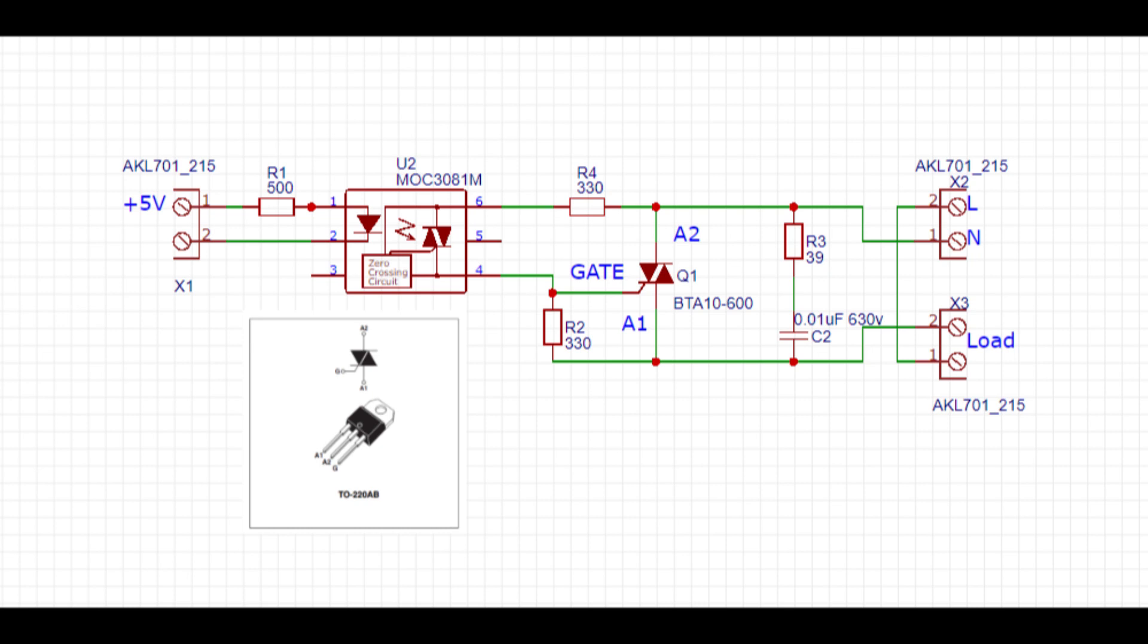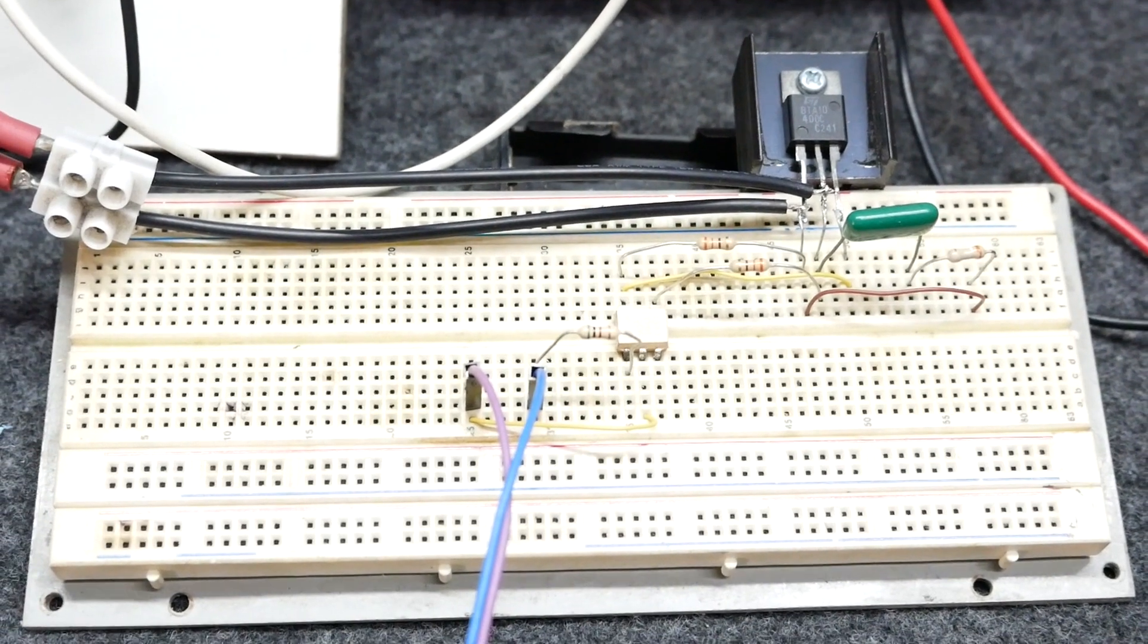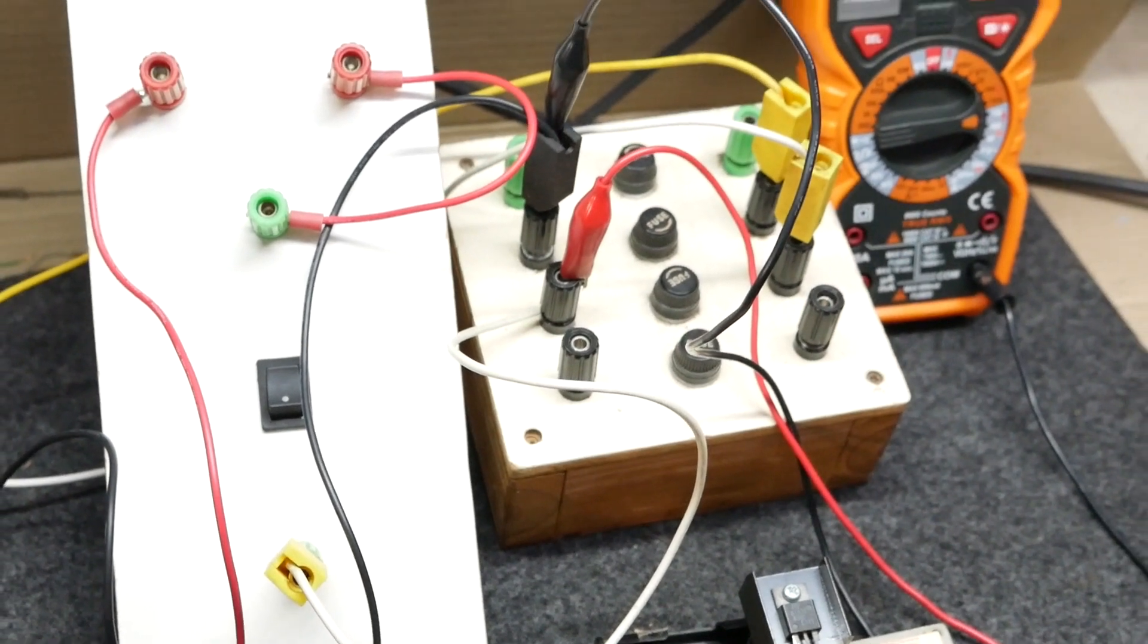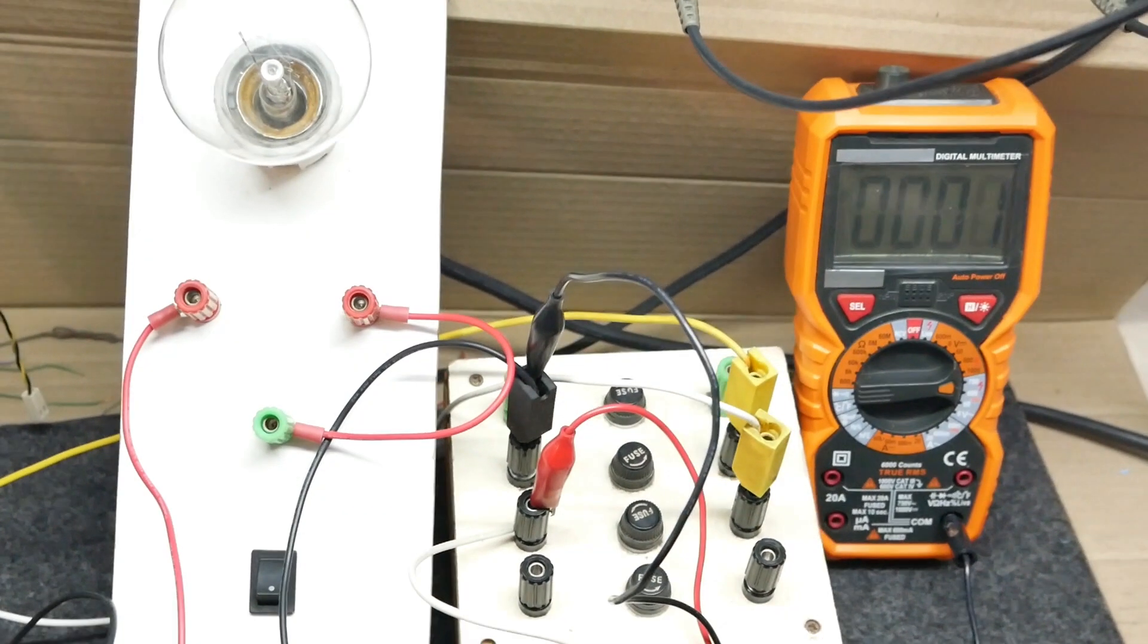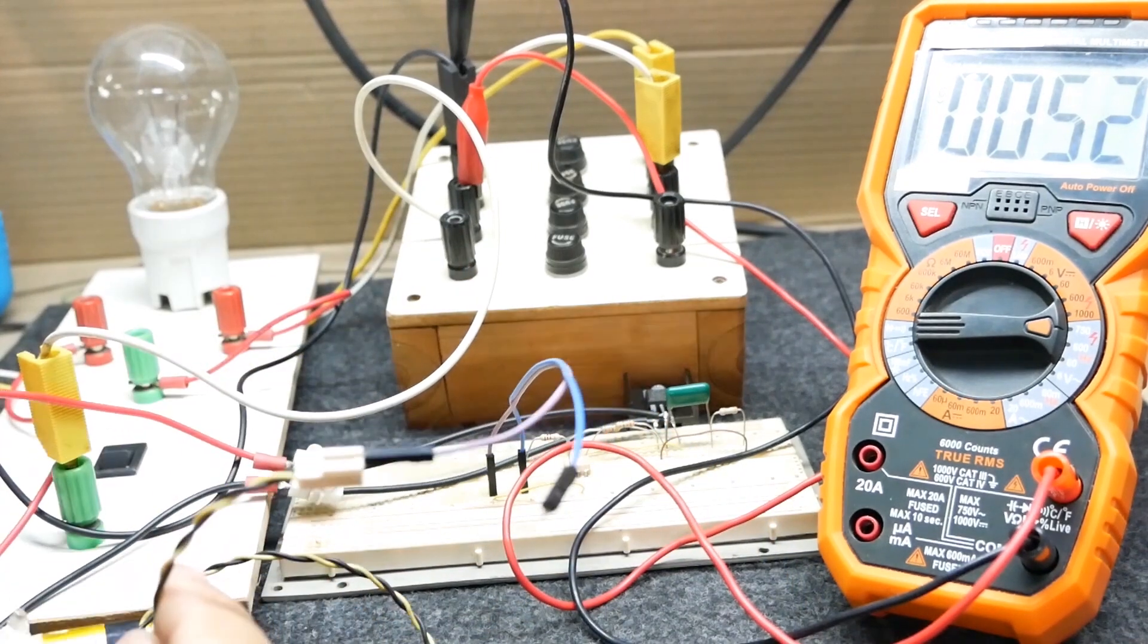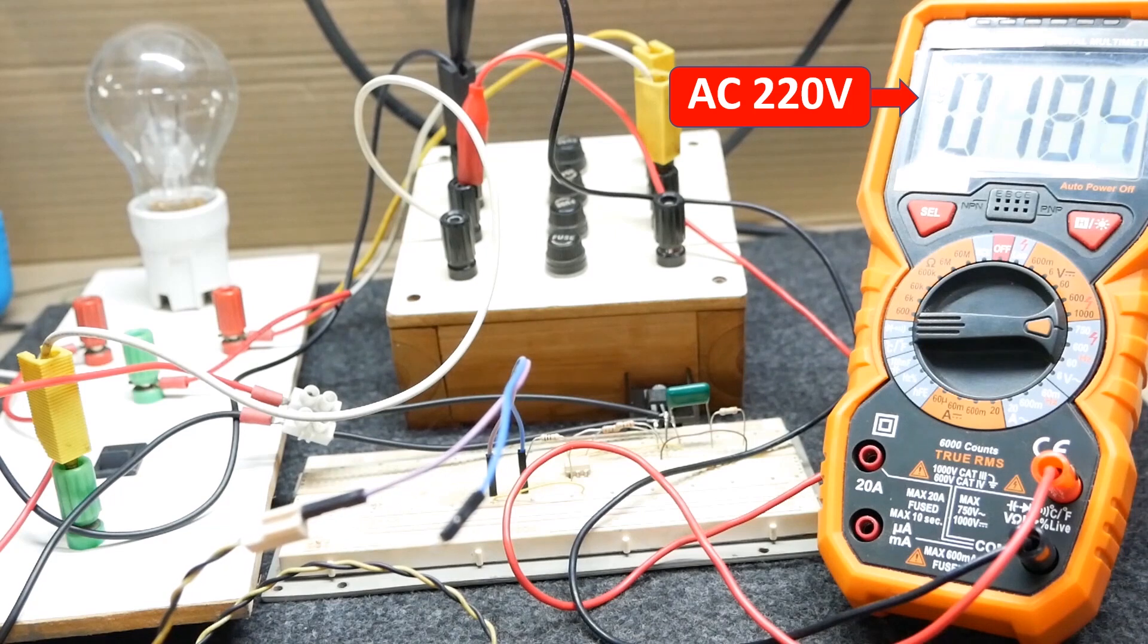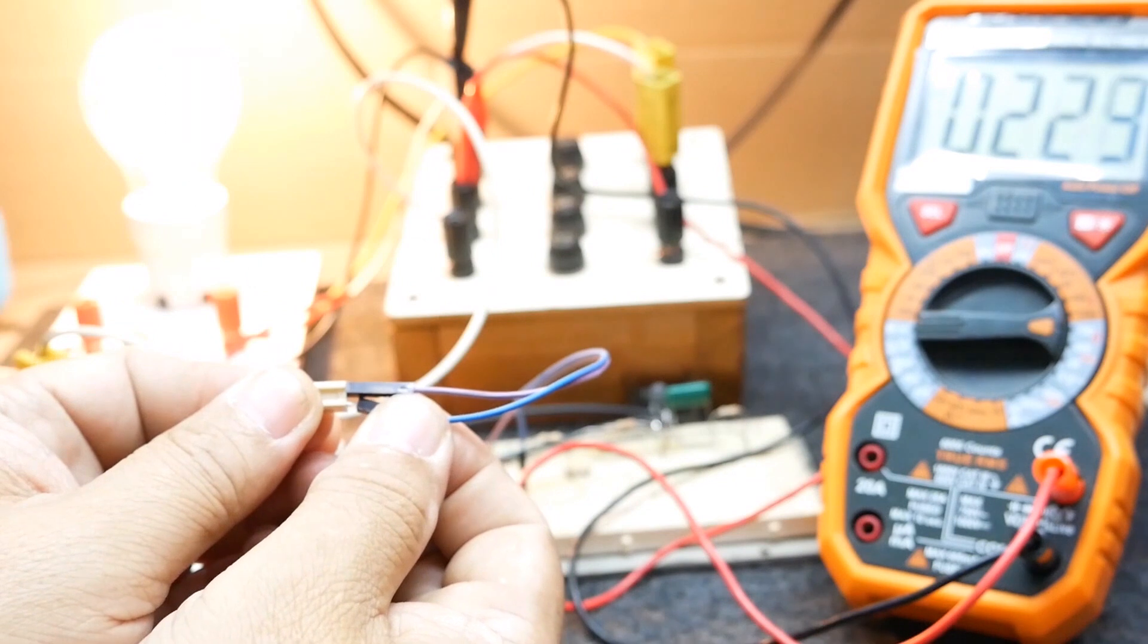Next step, we are going to experiment. The load for this experiment is a 220 volt 50 watt incandescent lamp. The fuse is used for protecting the circuit. We use battery voltage as the input signal. The lamp will turn on and off when we supply the input signal voltage.